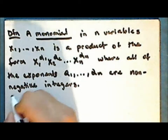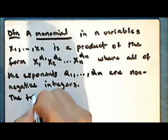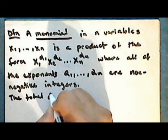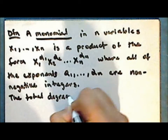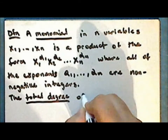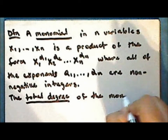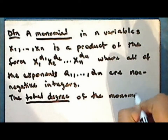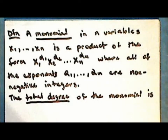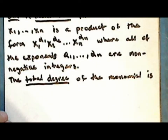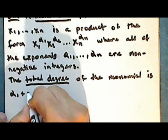The total degree of the monomial is the sum of the non-negative integers.